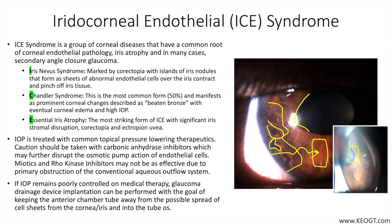On gonioscopy, the abnormal changes in the iris can also be seen extending to the angle, and under slit lamp biomicroscopy the involvement of the trabecular meshwork is visible, with a few PAS that are described as high and anterior to Schwalbe's line.